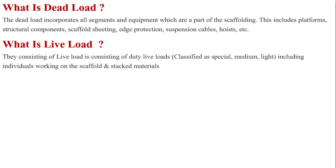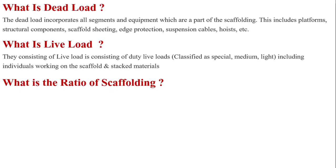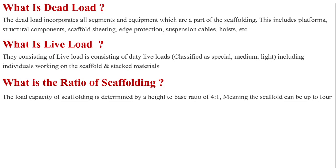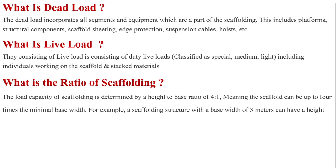The live load means how many people are working at any one time on the scaffolding. So now we know the load is determined by the height-to-base ratio of 4:1, meaning scaffolding can be up to 4 times the base width. For example, if we have made 3 meters of scaffolding base, then the height of our scaffolding will be 12 meters.